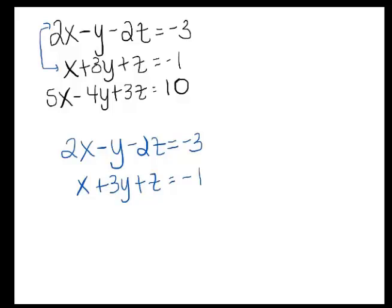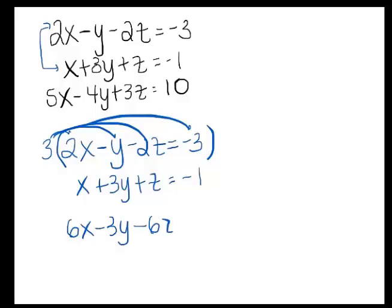So how do I eliminate those y's? I'm going to multiply the top equation by three. Okay, now don't forget to distribute all the way through. So you're going to have 6x minus 3y minus 6z equals negative 9.